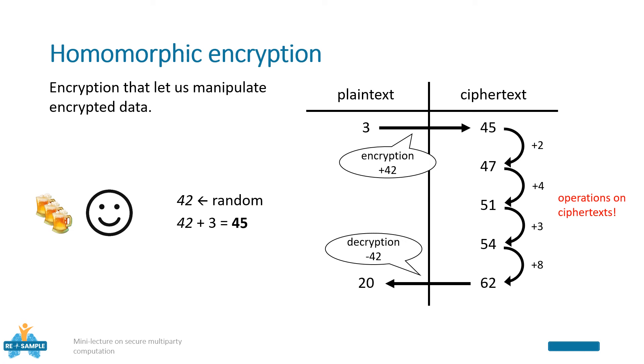The decryption is subtract 42, getting back to the plaintext domain, and also getting the result and concluding the protocol.